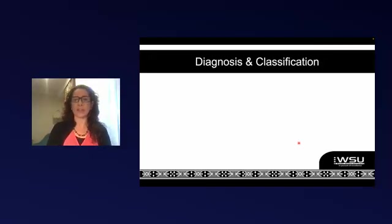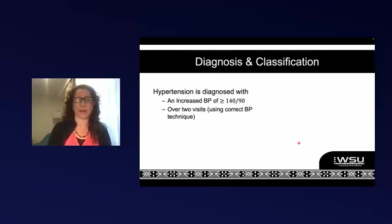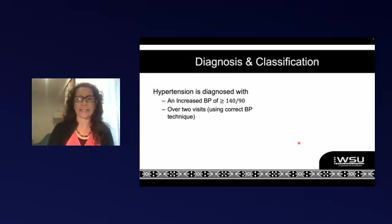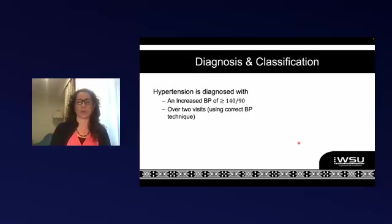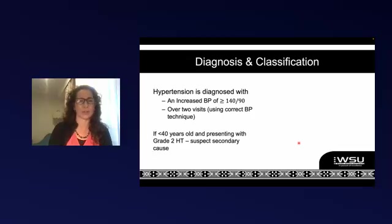In South Africa, we still classify hypertension as a blood pressure over 140/90. Internationally, they are tightening up some of these targets. It's very important to make sure that you've had a couple of readings over at least a couple of visits before you make this diagnosis and start somebody on treatment. Somebody in pain or distress might also have a high blood pressure at the visit but might not necessarily have hypertension — so make sure you get that diagnosis correct.